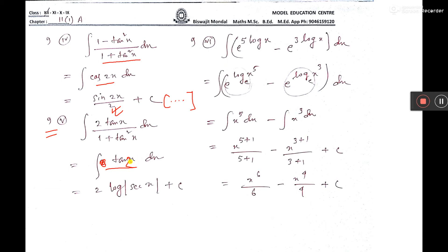Now, what is the formula of tan x? Log mod sec x. Here, x means 2x, and 2 is there. So, these 2 you have to divide.